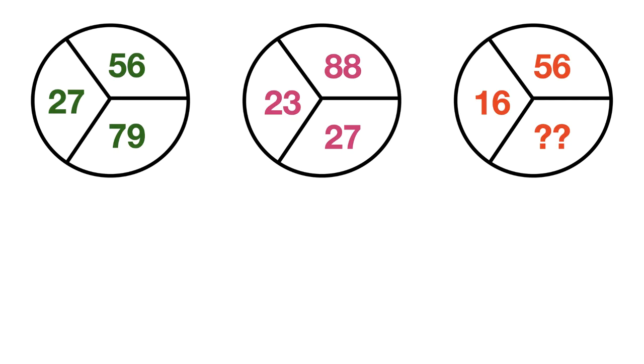Let me explain the solution now. First of all, finding the relation between the numbers is not easy since it is not straightforward. By solving more and more such problems and through practice, we can solve these kind of problems in minimum time. So coming back to the problem, the logic here is the left number multiplied by 5 gives the total of the other two.